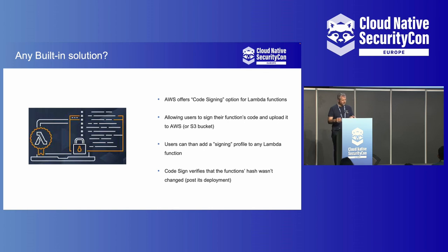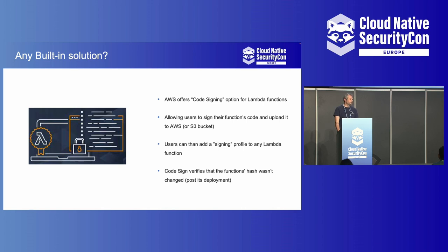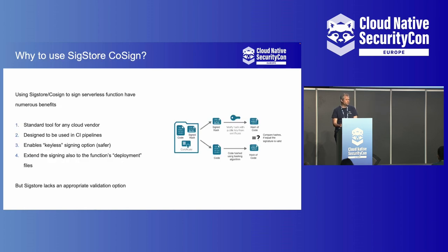There is one exception in AWS. AWS has its own built-in solution called Code Signing. It's a great step to secure serverless functions. You can use code signing for Lambda functions — you sign your code and upload the signed code into the cloud account or to an S3 bucket. You need to create a signing profile using IAM permissions to identify who and what can be signed. Then you apply this signing profile to any Lambda function you want, and it verifies that the Lambda is signed before it executes. What I would like to present is an alternative approach using SigStore and Cosign to sign serverless functions and their deployment files. It's a standard tool, so it can be used for any cloud provider, not just AWS. It's designed to be used in CI/CD, so it's easy to implement.